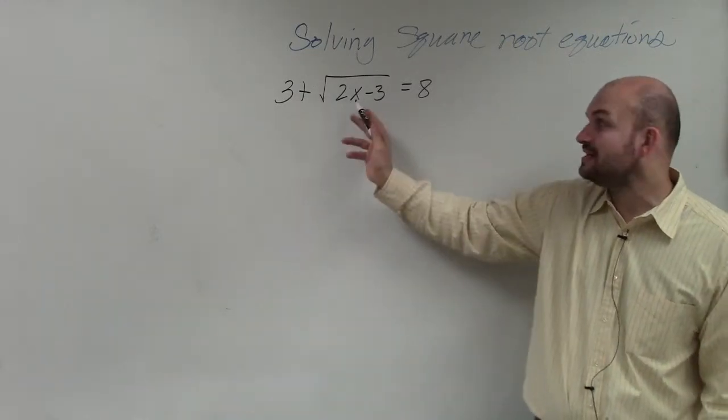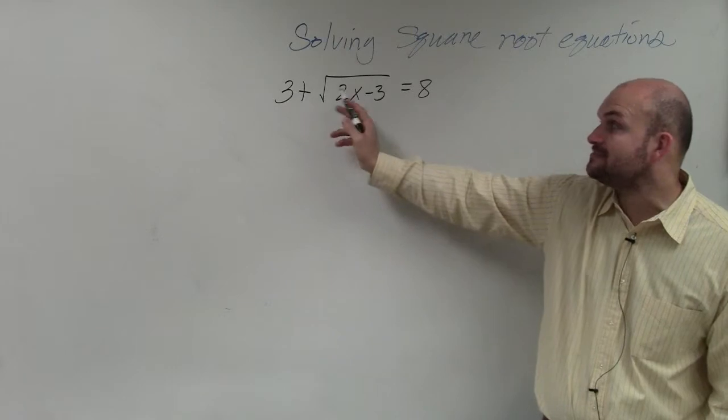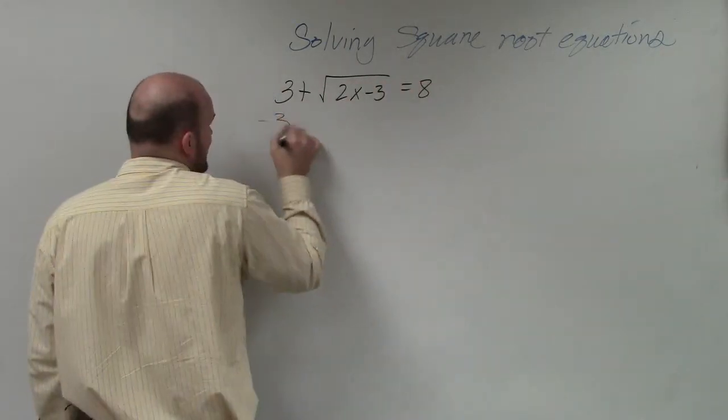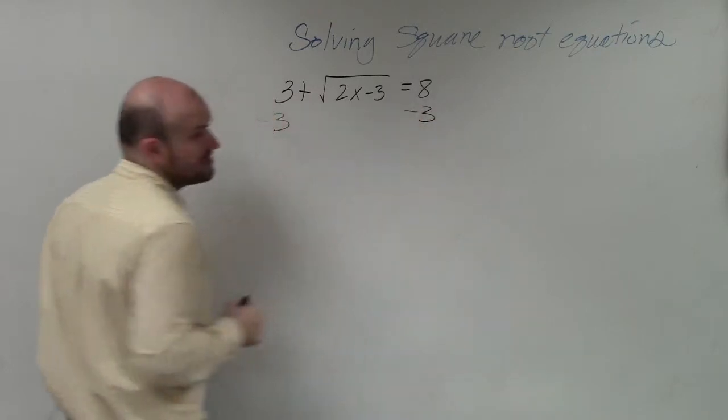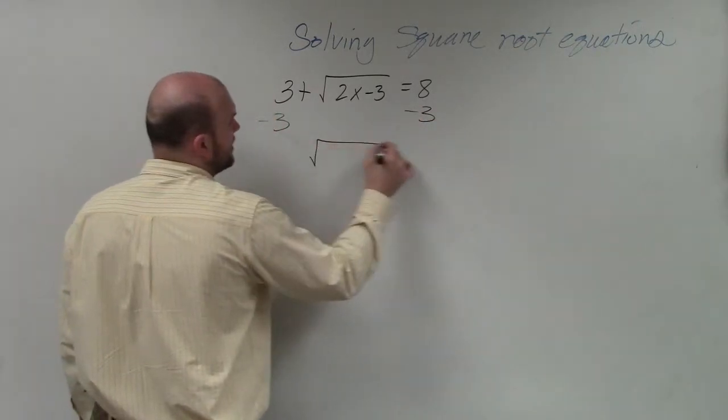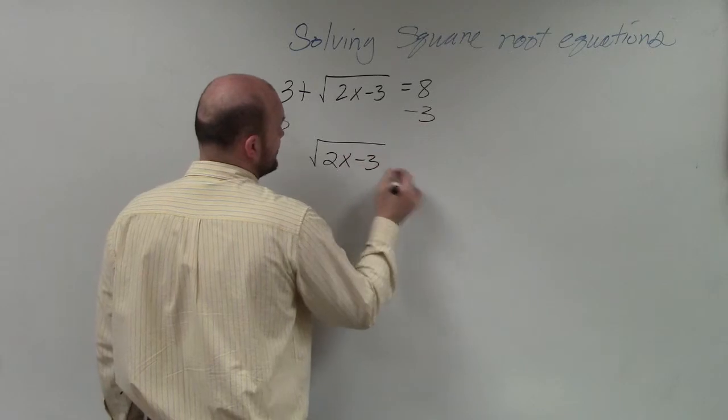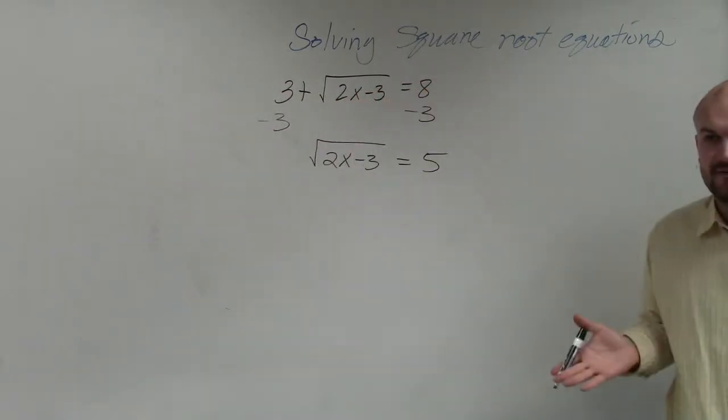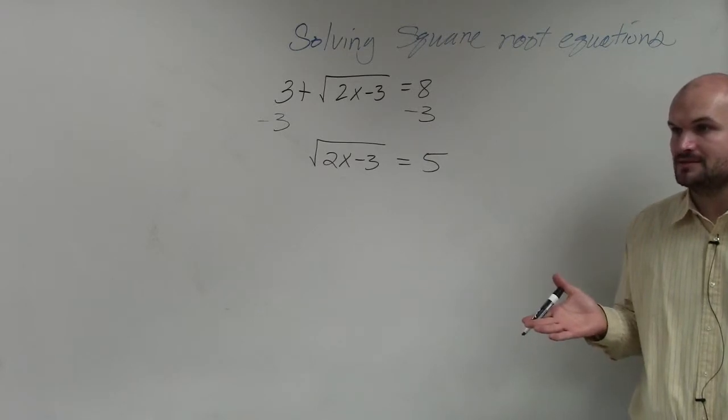So you guys can see in this problem, I have 3 being added to that square root. So the first thing I'm going to do is subtract the 3 on both sides. So now I have the square root of 2x minus 3 equals 5. Does everybody see that?